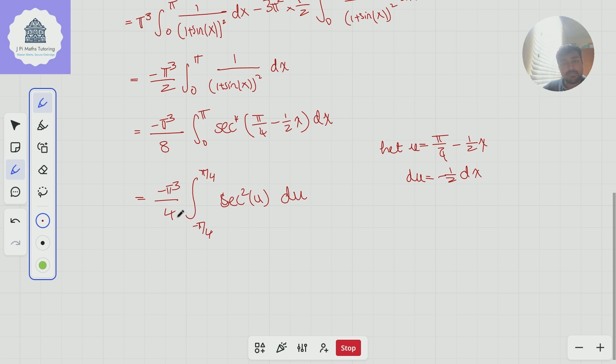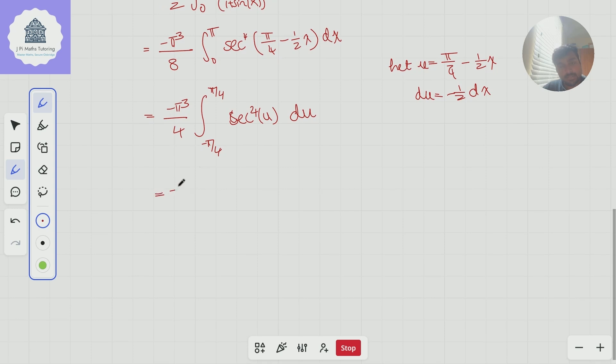So we get minus π cubed over 4 times this integral here, sec to the 4 of u du. And I'm going to use a nice little trick here. This is integrating an even function over a symmetric interval. So I can write this as minus π cubed over 2 times the integral from 0 to π over 4 of sec to the 4 of u du. If you're not really sure why that's true, think about sketching this graph and why the fact that it's an even function means I can do this.